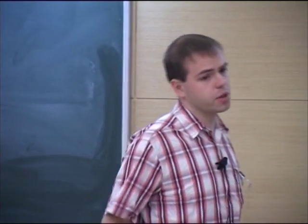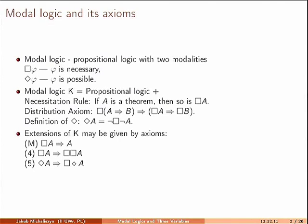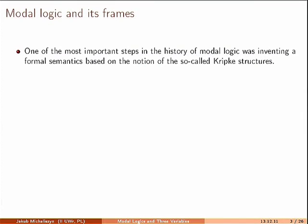This is nice because it's really easy to extend such a proof system to get richer logics — we just need to add more axioms. One of the most important steps in the history of modal logic was inventing a formal semantics based on the notion of the so-called Kripke structures.